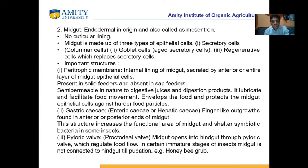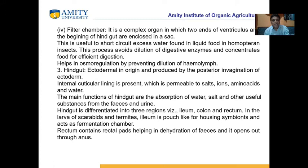Gastric caeca — enteric caeca plus hepatic caeca — are finger-like outgrowths found at the anterior and posterior ends of the midgut. The pyloric bulb, also called the proctodeal bulb, is where the midgut opens into the hindgut, regulating flow. In certain immature stages, such as in honeybees, the insect midgut is not connected to the hindgut. The filter chamber is a complex organ in which two ends of the ventriculus and the beginning of the hindgut are enclosed in a sac.